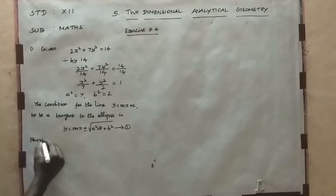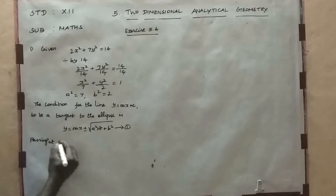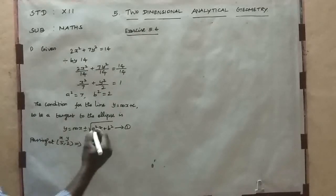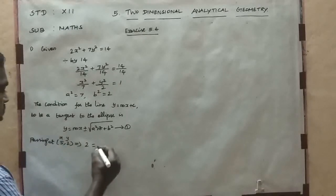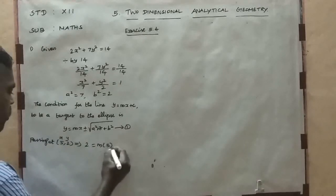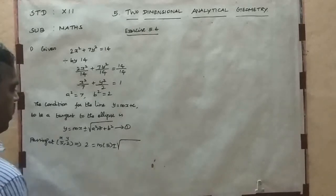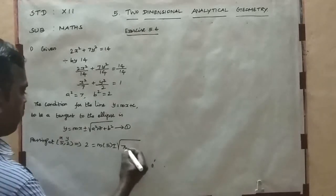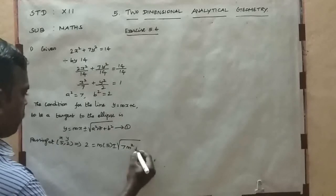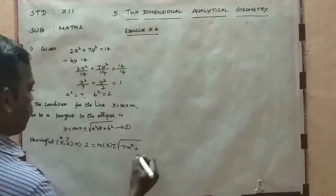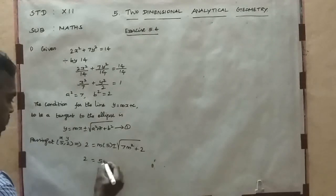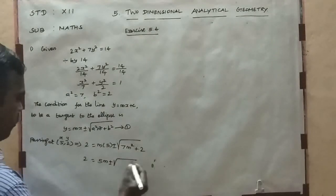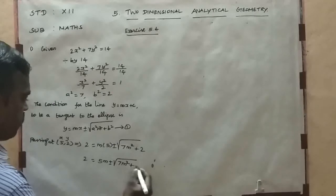Passing at (5, 2), substitute in this equation. So y = 2, x = 5: 2 = m(5) ± √(a²m² + b²), where a² = 7 and b² = 2. So 2 = 5m ± √(7m² + 2).